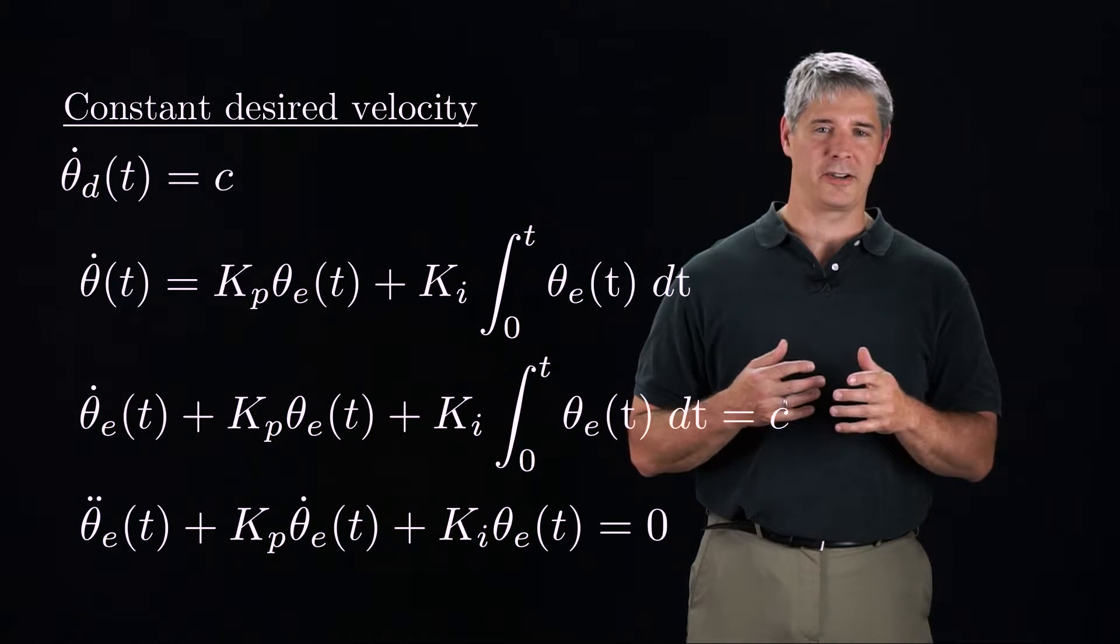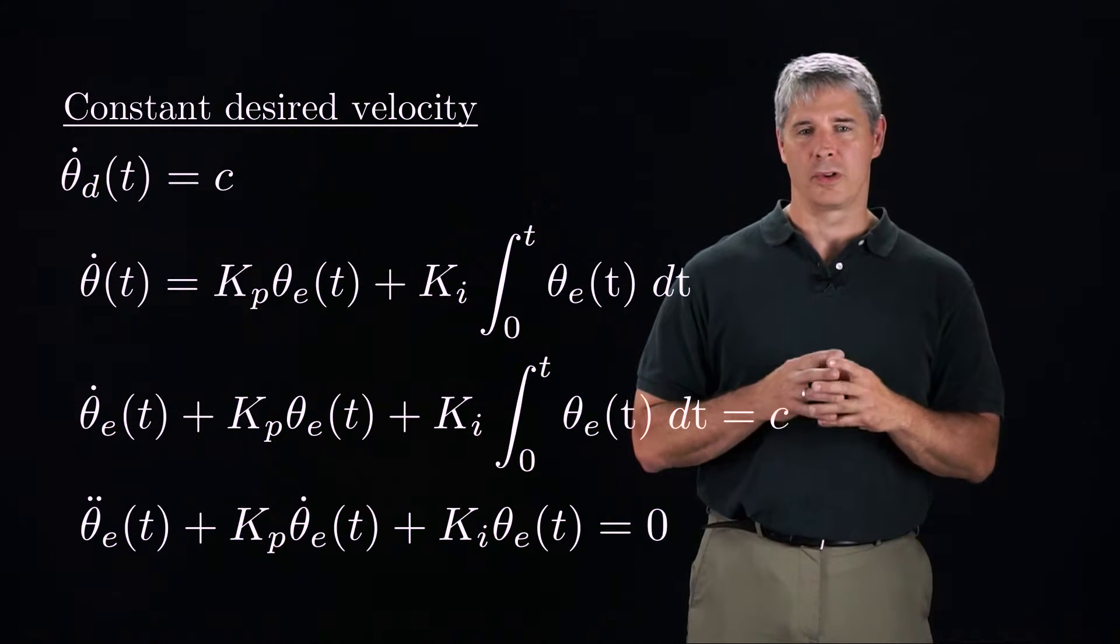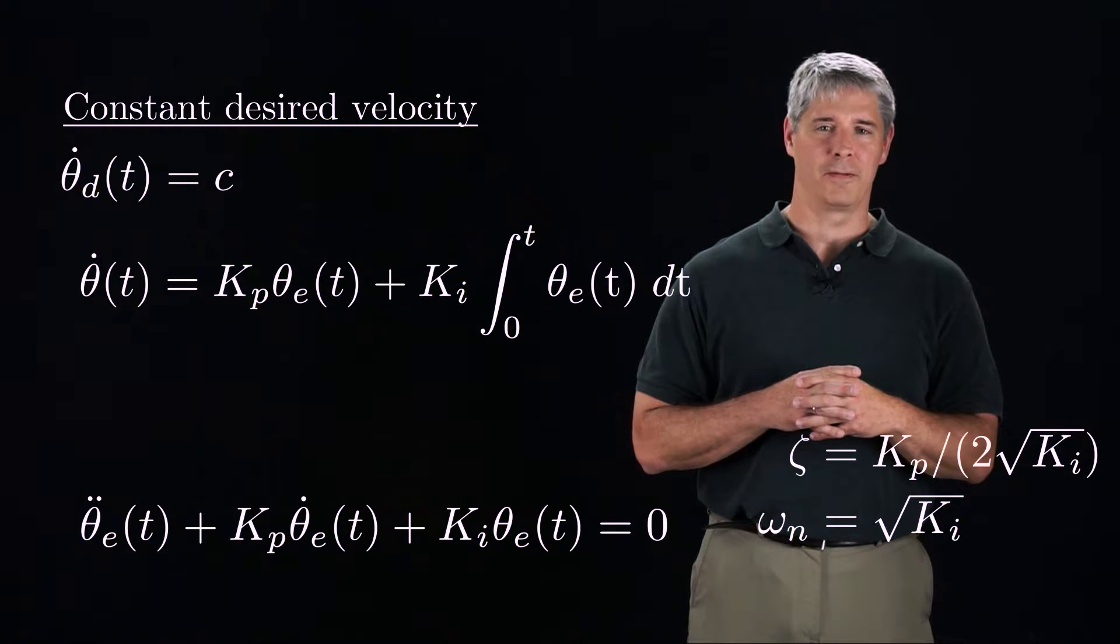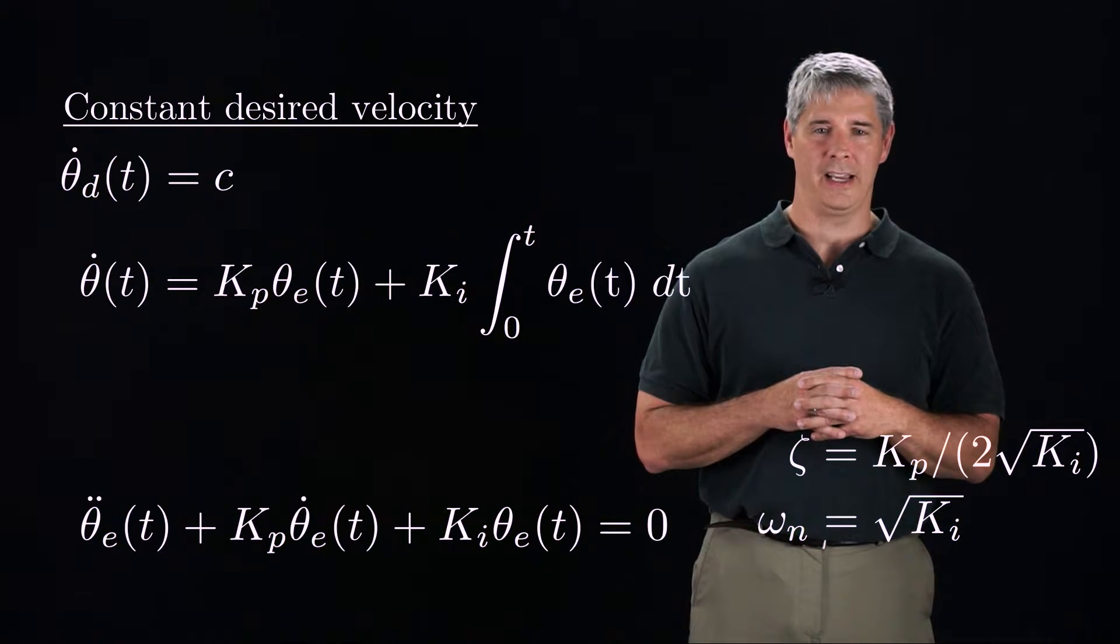We now have a standard second-order homogeneous differential equation, where the damping ratio is Kp over 2 times the square root of Ki, and the natural frequency is the square root of Ki.